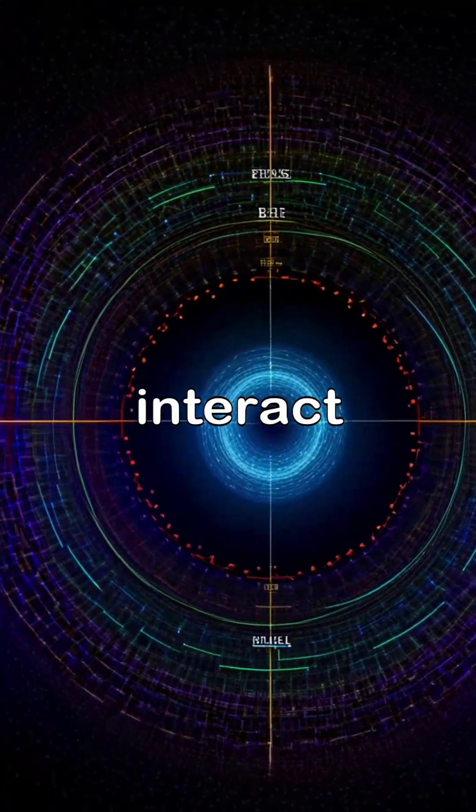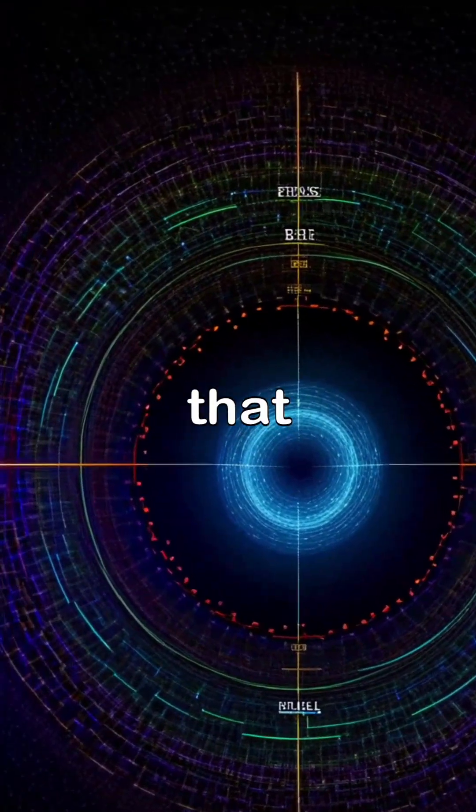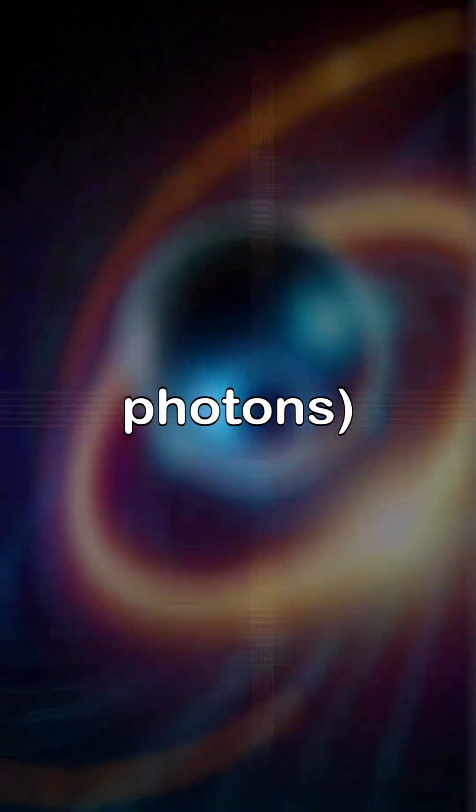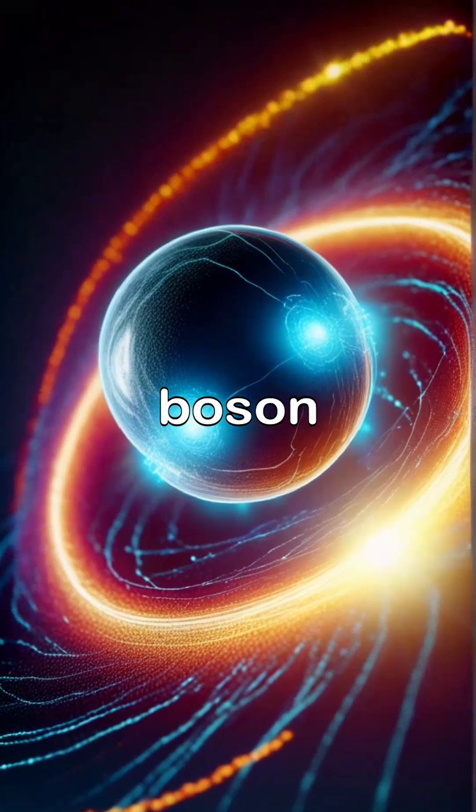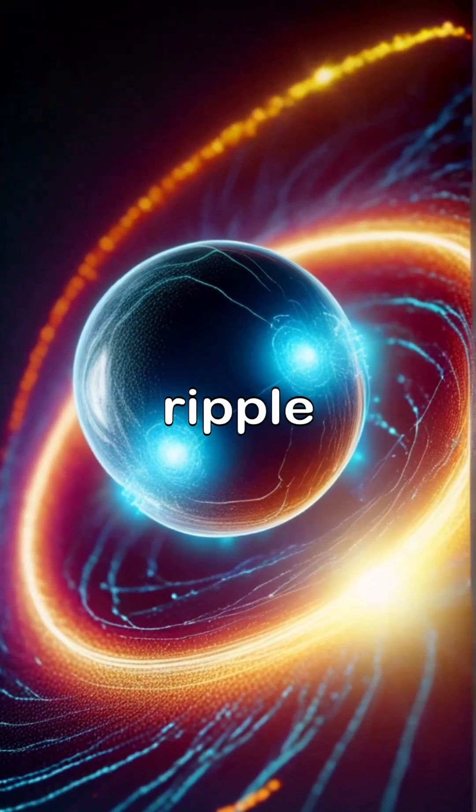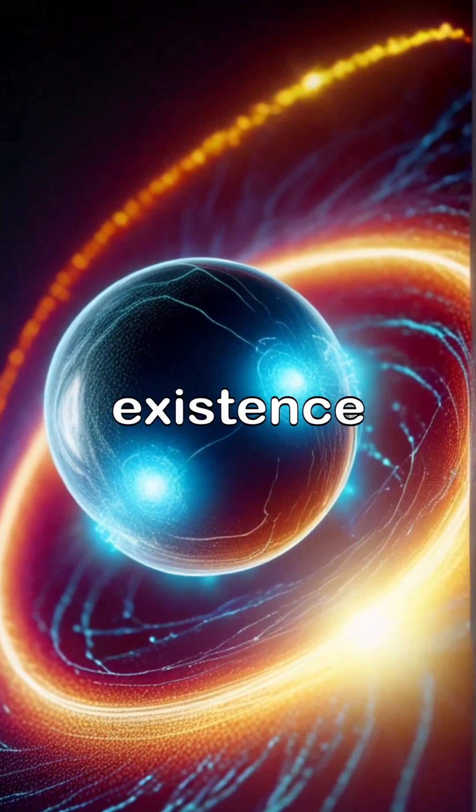Particles that interact strongly with the field gain more mass, while those that don't, like photons, remain massless. The Higgs boson is an excitation or ripple in this field, confirming its existence.